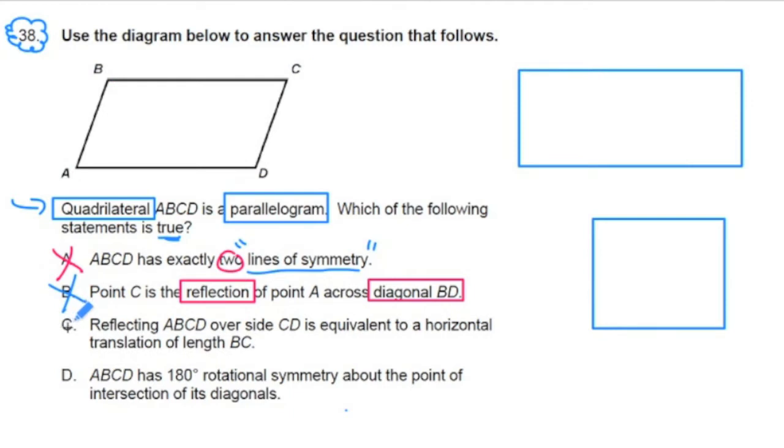Let's cross it out. What about C? Reflecting ABCD over side CD is equivalent to a horizontal translation of length BC. What? Look at all that language. We've got reflecting going on, we've got equivalent, and then we've got this phrase, horizontal translation. Lots of math going on here. So let's think about what this means.